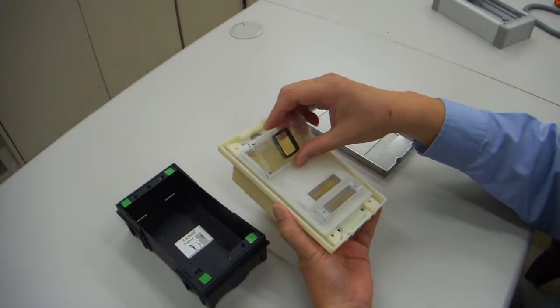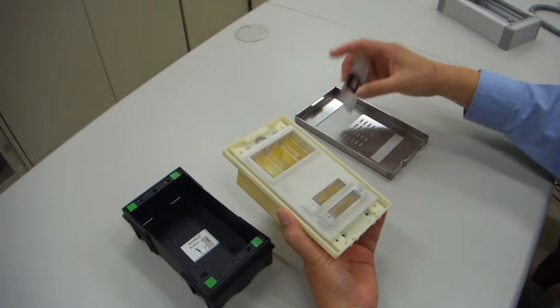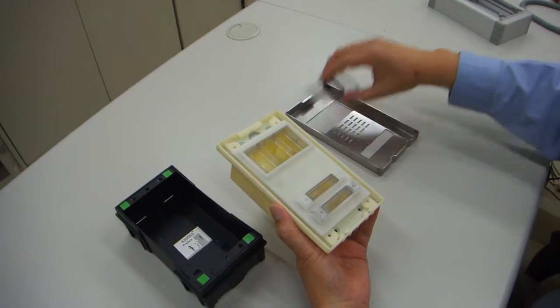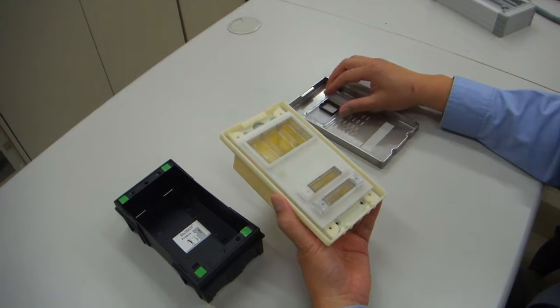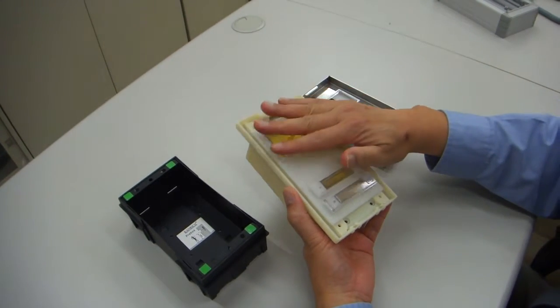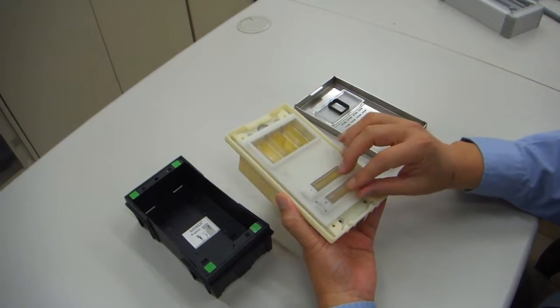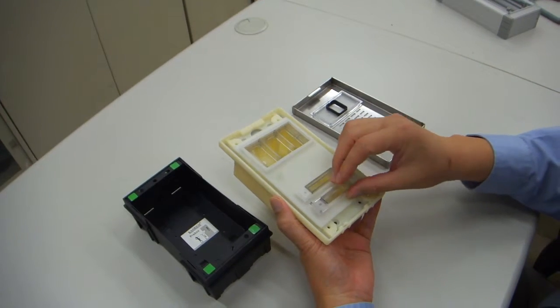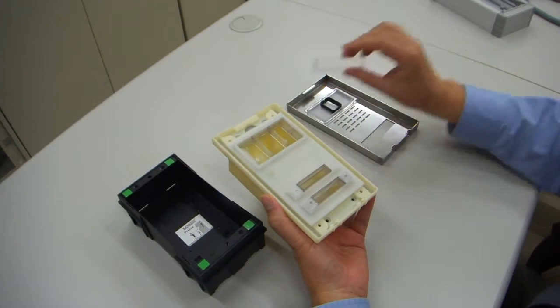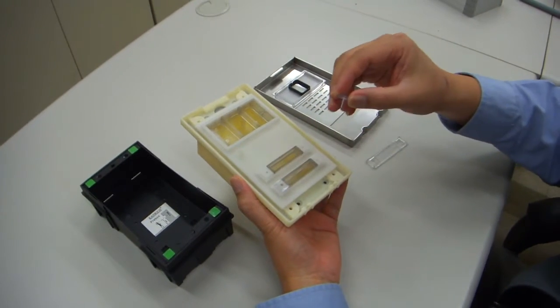Then the window. We cannot fix it on the cover because we are totally fixed on this rubber. This is the nameplate and key.